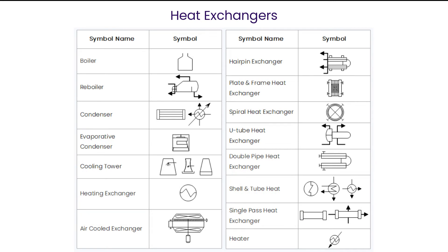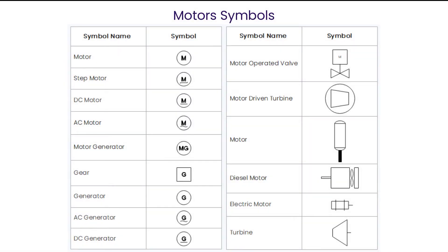A heat exchanger is a system used to transfer heat between two or more fluids. Heat exchangers are used in both cooling and heating processes. From household fans to industrial compressors, centrifugal or reciprocating pumps, mixers, crushers, etc., there are a wide variety of motors used in a process plant. Here is a list of symbols of such motors.